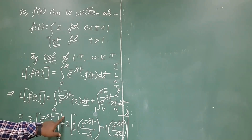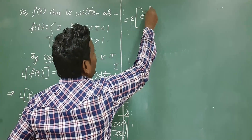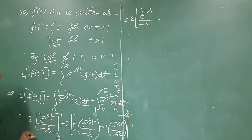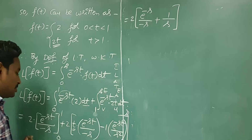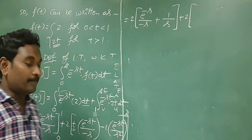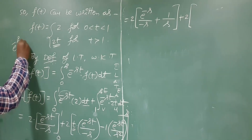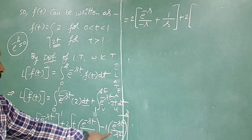First apply the upper limit. For the first part, replacing t with 1 gives 2 times e to the power minus s over minus s. Applying the lower limit t equals 0 gives e to the power 0 equals 1, so 1 over minus s, giving plus 2 over s. For the second part, applying the upper limit infinity: e to the power minus infinity is 0, so both terms become 0.